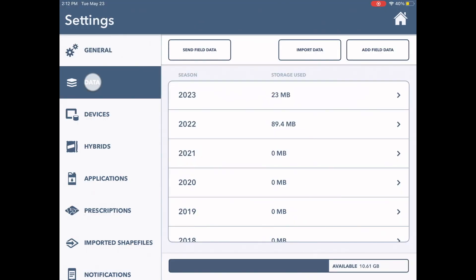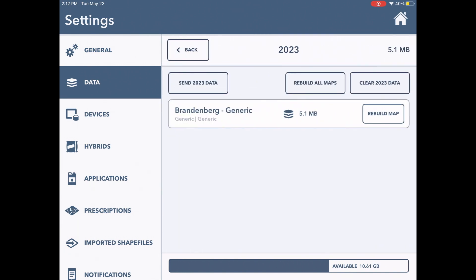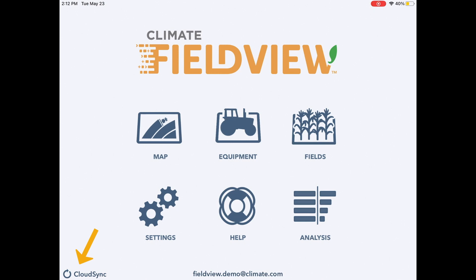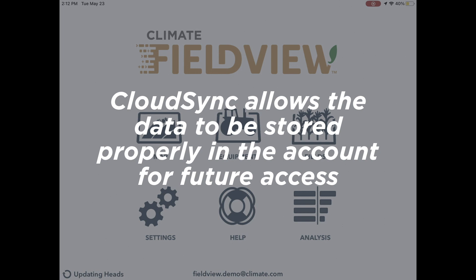This data is located only on the iPad it was collected on until it syncs to the web. Cloud sync allows the data to be synced to the cloud and can be available on other parts of the platform as well as other cab apps used under the same account. Cloud sync allows the data to be stored properly in the account for future access.